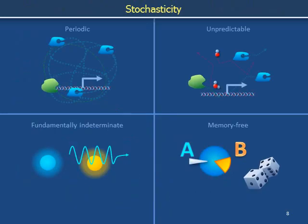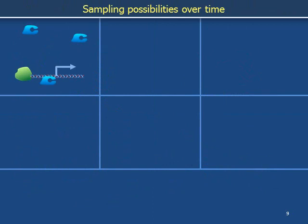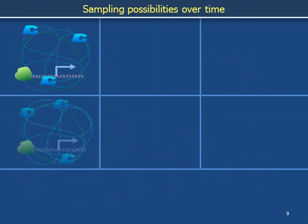Periodic systems, unpredictable systems, and fundamentally indeterminate systems are distinct. In the first example, molecules followed periodic paths. The possibility of finding different arrangements came from finding the molecules at different locations along their deterministic paths, not from jiggling or randomly changing the paths themselves.